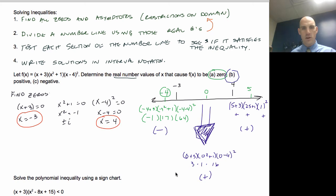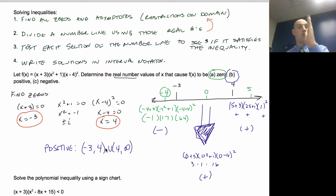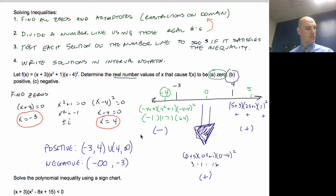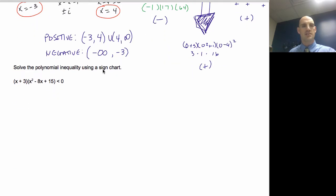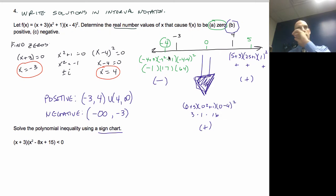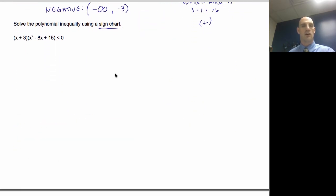My answer for where it's positive: positive intervals are from −3 to 4 and also from 4 to infinity. I'm not positive on 4 because that's one of my zeros. My negative interval is from negative infinity to −3, not included. That's called a sign chart — breaking up the number line into intervals and figuring out the signs at different points.